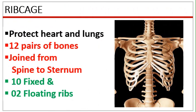Rib cage. As the name suggests, these bones form a cage-like structure around the heart and lungs to protect them. There are 12 pairs of bones which join the spine at the back and the sternum or the chest bone in the front. Among these 12, the last two pairs do not join the sternum and are called floating bones.